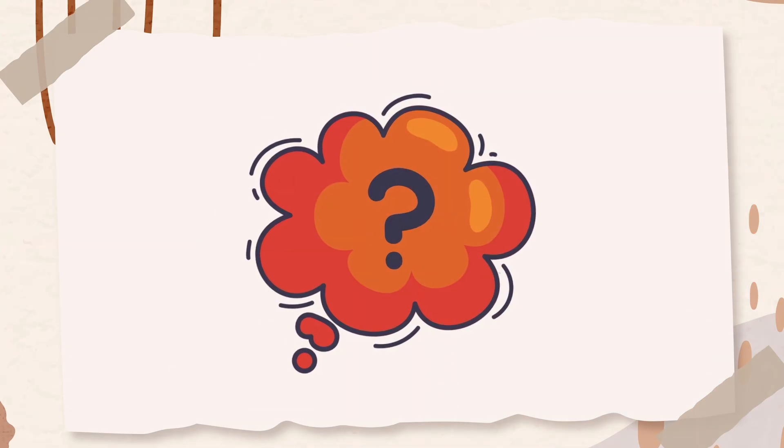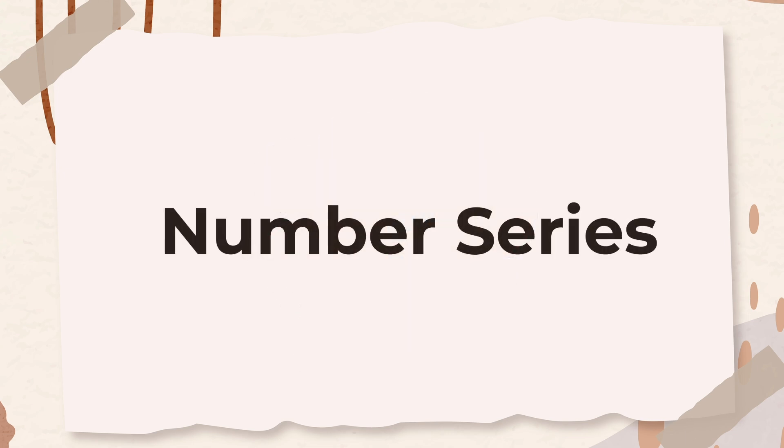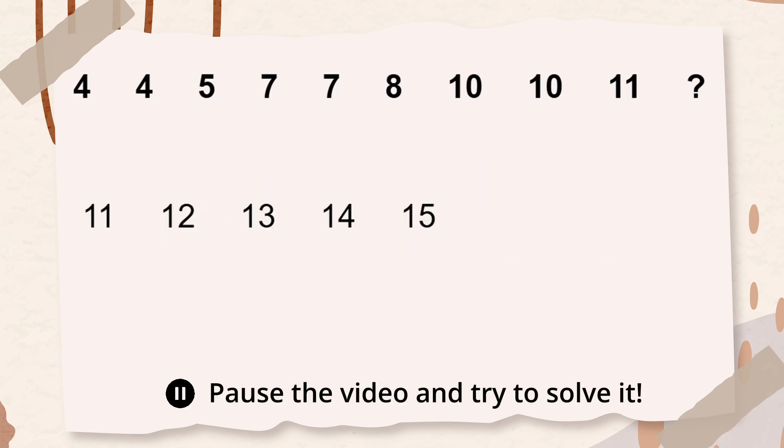The next subtest in this battery is called number series. This question shows a series of numbers that have a rule. Use the rule to determine which number will come next in the series.